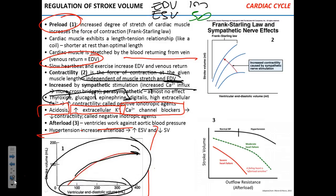Calcium channel blockers are drugs that block calcium channels in the heart and reduce the force of contraction. Which disease would they treat? Hypertension — high blood pressure. Because if it decreases the force of contraction, your blood pressure will go down.